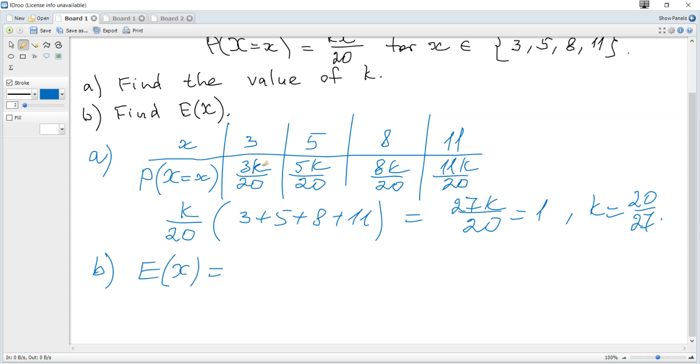It's 3 multiplied by 3k over 20 plus 5 multiplied by 5k over 20 plus 8 multiplied by this plus 11 multiplied by this.